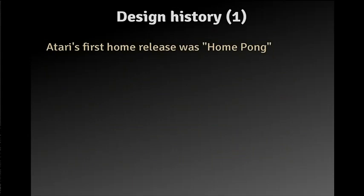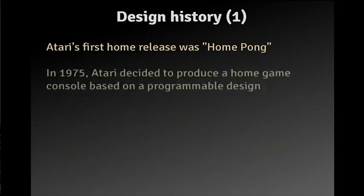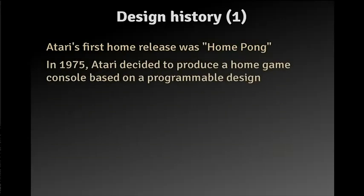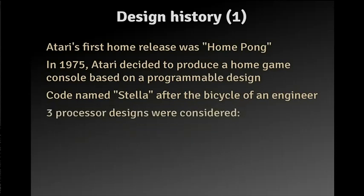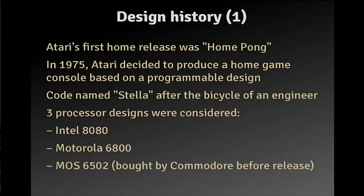Their first release was a home version of the Pong game, which was a success and a failure both. It was a success because it was the first video game that got into people's homes, but it was more a failure for Atari because it was cloned very fast and they couldn't get much money out of it. So in 1975 they decided to produce a home game console based on a programmable design using a CPU. They code-named it Stella, after the bicycle of one of the engineers. When they started designing, three processor designs were considered: the Intel 8080, the Motorola 6800, and the MOS 6502.